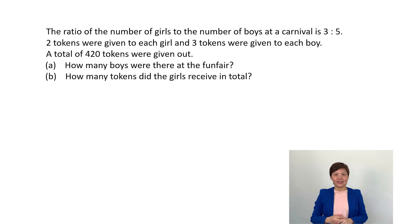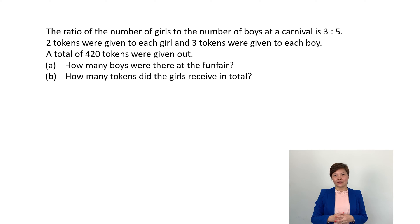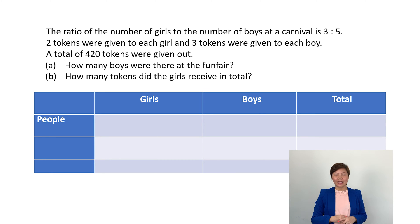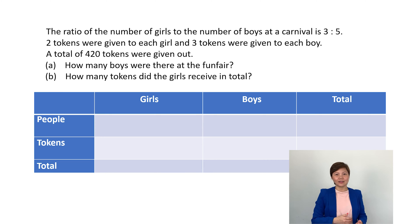Let's take a look at the first question. In this question, there are boys and girls in the story, and tokens were given to the boys and girls. Draw the table and let's write the headers: girls and boys, followed by people and tokens. Now let's use the read and write approach, and as we read the question, we'll fill in the information into the table.